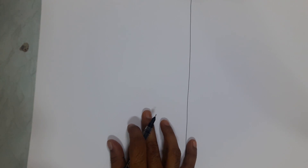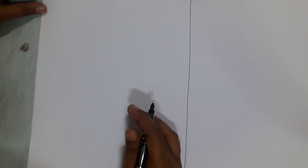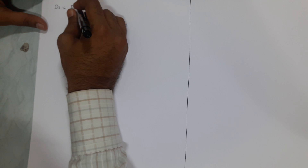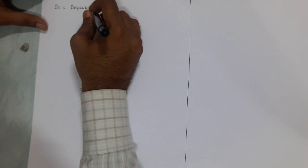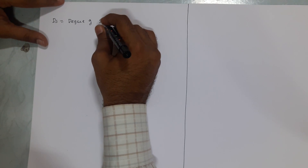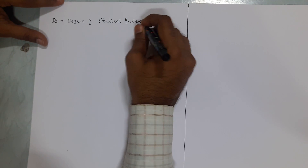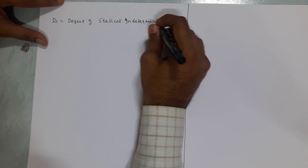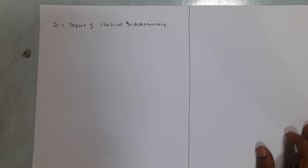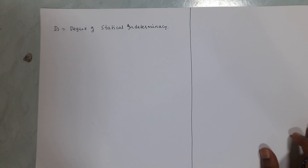Hello everyone. Today I will explain how to find DS — DS means Degree of Statical Indeterminacy. Before that, we will see what is a determinate structure and what is an indeterminate structure.